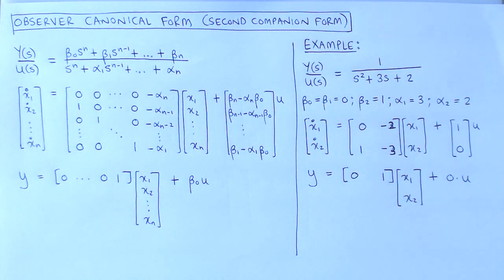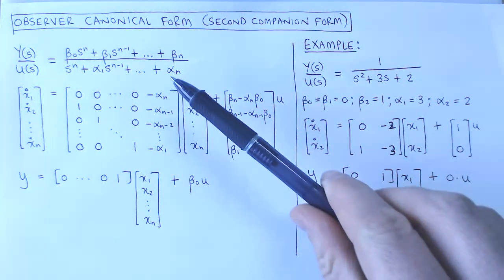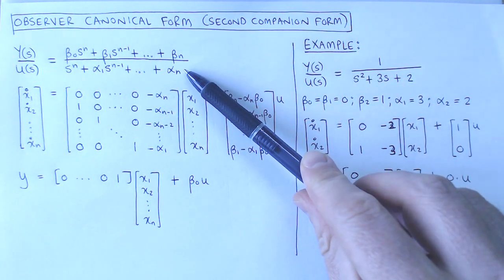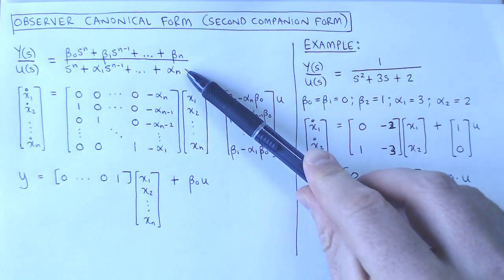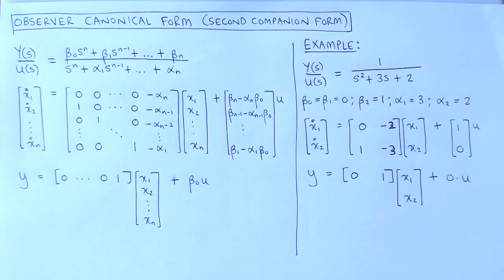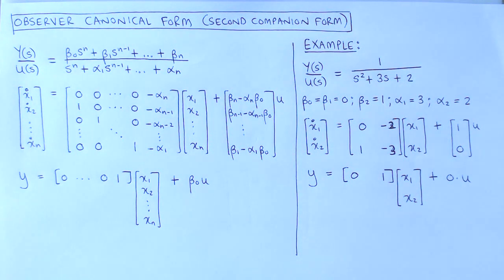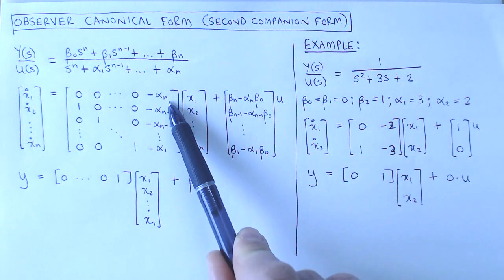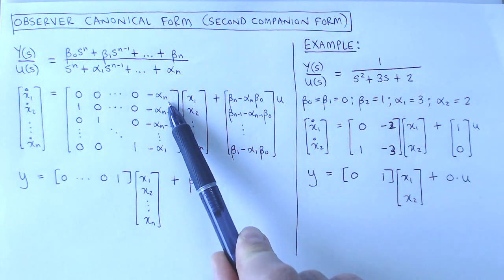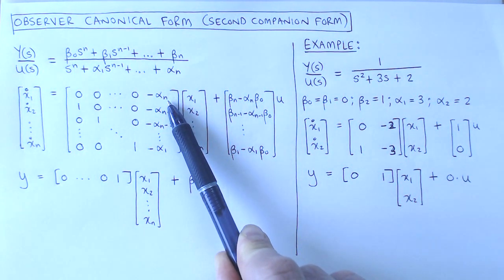Suppose we have the same transfer function of a general nth order system as before. For the observer canonical form, we choose the states so that the system matrices look very similar to that of the control canonical form. Specifically, the A matrix is the transpose of the A matrix of the control canonical form.